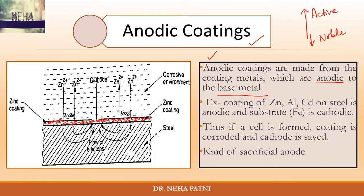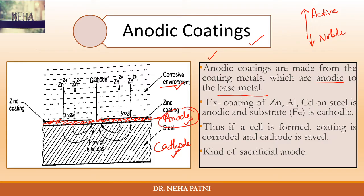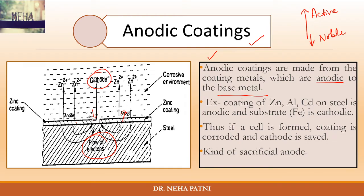To protect your base metal, coat it with a metal that is anodic to it. If a corrosion cell forms, you have an anode (the coating), a cathode (the base metal), and an electrolyte — conditions for wet corrosion. If corrosion occurs, the coating gets corroded and your metal is saved. Importantly, even if a crack develops in the coating, your metal remains safe because the coating is still the anode and the base metal remains the cathode.